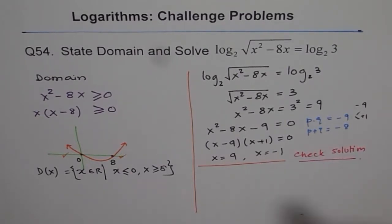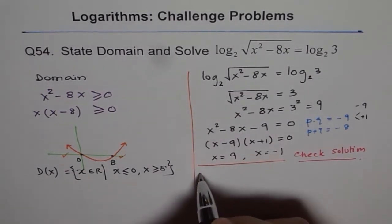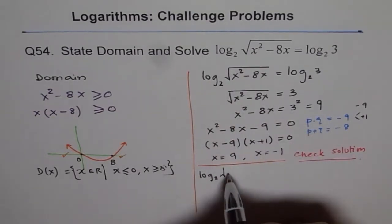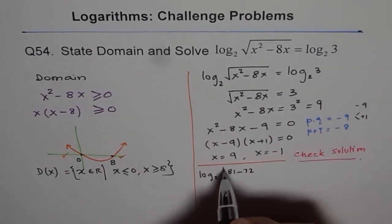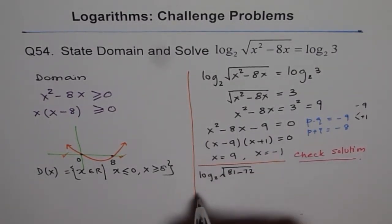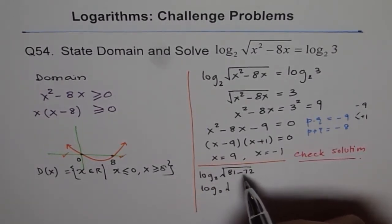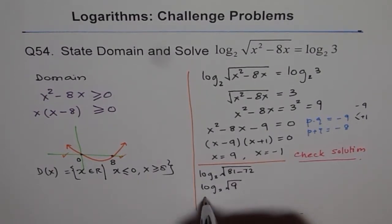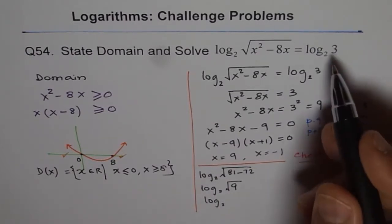Now, let's check it. So, what we will do is we'll plug 9 and see whether it works or not in the original equation, right? So, what we get? We get log 2 of square root 9 squared is 81 minus 9 times 8 is 72. So this is log 2 of square root of, so 81 minus 72, so we get 9, right? So, which is 9 and that is log 2 of, let's say log root, we'll leave it here and we'll see what do we get on this side.